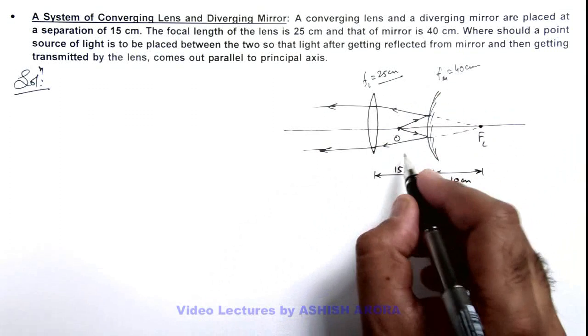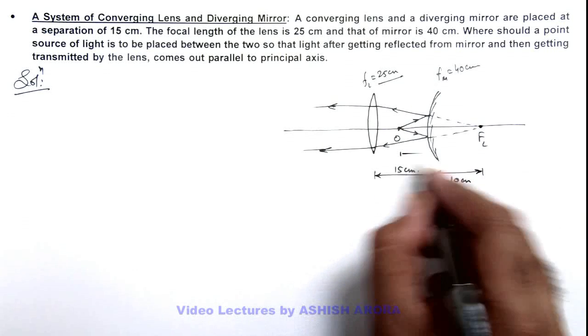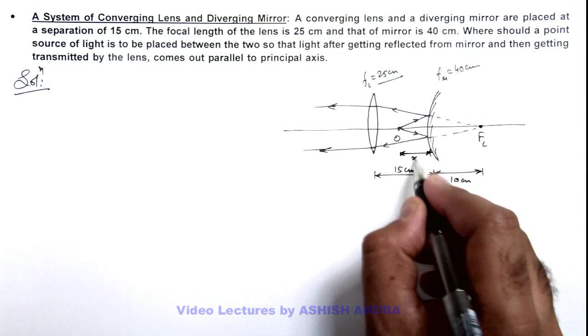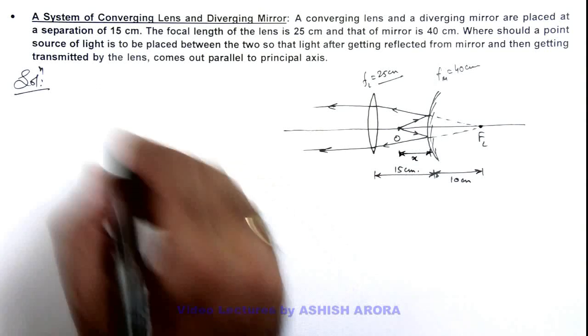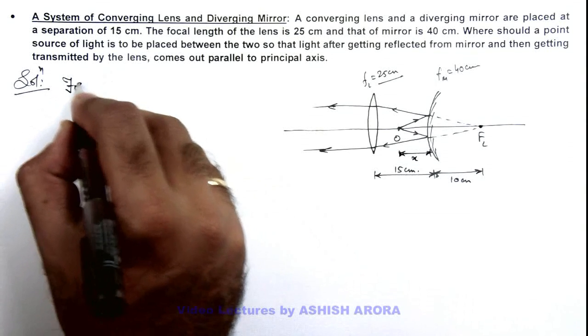So for this mirror if the object is located at a distance x, x we can calculate by using mirror formula. So we can write, for mirror: